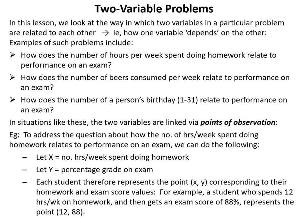In situations like these, the two variables are linked via points of observation. For example, to address the question about hours per week spent doing homework and exam performance, we define x as the number of hours per week spent doing homework and y as the percentage grade on an exam. Each student represents a point (x, y) — for example, a student who spends 12 hours per week on homework and gets 88% represents the point (12, 88).